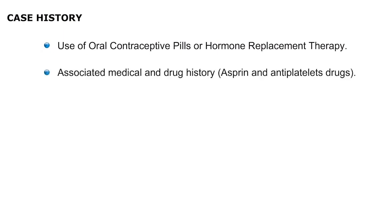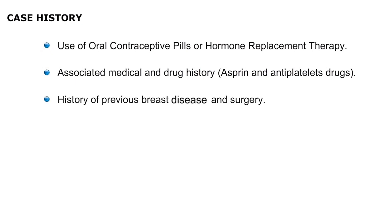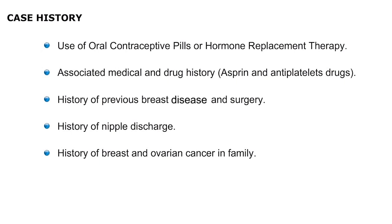Associated medical history in the form of diabetes, heart disease, blood pressure, and drugs used for these diseases should be recorded. History of any previous breast disease and any surgery performed on the breast should also be recorded. Detailed menstrual history with age at menarche and if she has attained menopause should be recorded. The number of children born is recorded, followed by detailed history of any cancer in the breast, ovaries, or any other cancer — both from the mother's side and the father's side.